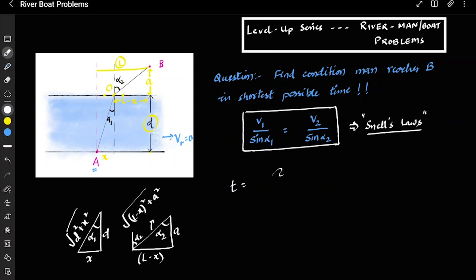So A O upon the velocity, so A O is D square plus x square under root upon velocity which is V1, plus the another length which is OB. OB is L minus x whole square plus A square under root upon V2. So this is the total time. Now we have to find the shortest possible time.